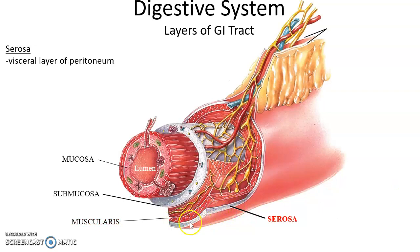The outermost, most superficial layer is the serosa. The serosa is actually also part of the peritoneum in many places — the visceral layer of the peritoneum often forms the serosa, the outermost layer of the gastrointestinal tract.